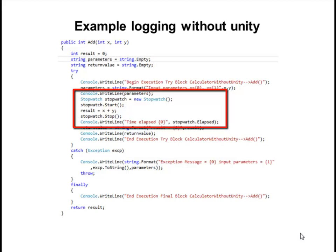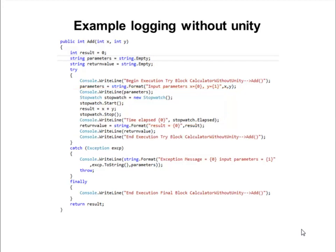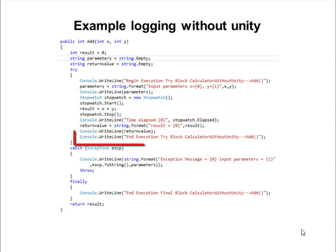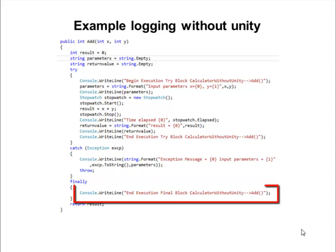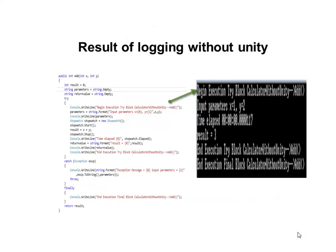We record the total time that has elapsed during the execution. Then we will log the result. Before leaving the try block we will log that the try block is about to exit. If there are any exceptions then we will log them, and then we will log that we are exiting the finally block. Following is the result of executing the Add method.